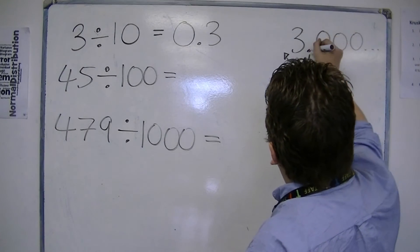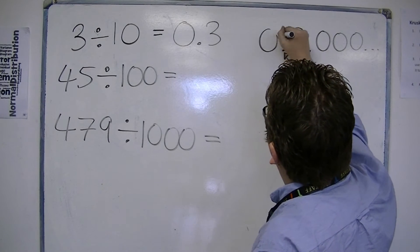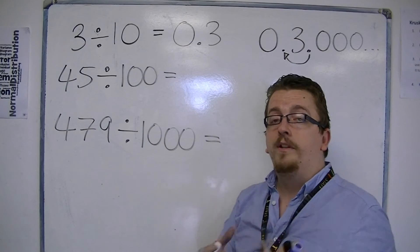So, the decimal point moves, and we then have to write it as 0.3.